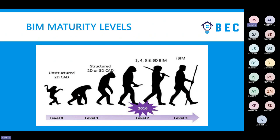In the UK and similar environments, people still refer to BIM maturity levels. At Level 0, people were only working in a CAD environment. Moving to Level 1, they transitioned from 2D to some 3D work. At Level 2, more advanced concepts were introduced — 3D, 4D, and 5D. Level 3 is completely integrated BIM, also known as Open BIM or Cloud BIM.